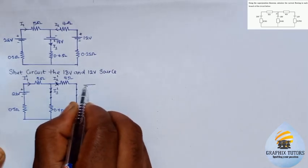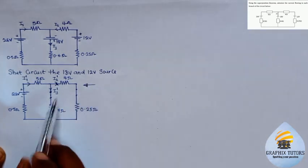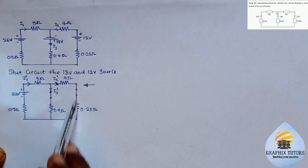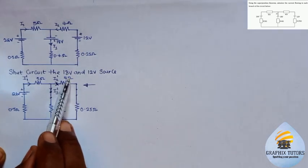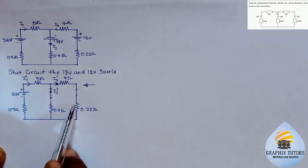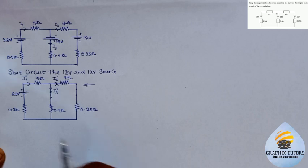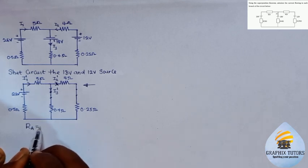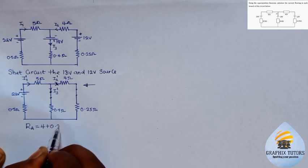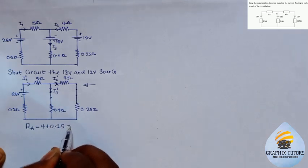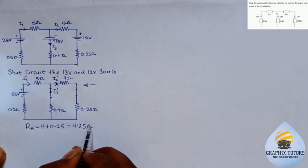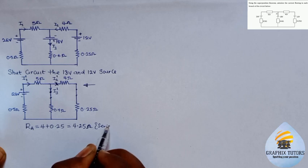Coming from this direction, I2 flows on this path. The same current that enters the first resistor as I2 enters the second resistor also, so both resistors are in series. I'll represent this combined resistance as Ra, which equals 4 plus 0.25, giving me 4.25 ohms — series connection.